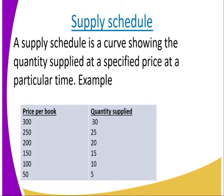An example: we have the price of the book and the quantity that was supplied. When the price is at 300, the quantity supplied was 30. When it is at 250, the quantity supplied is 25. When it is at 200, the quantity supplied is 20. When it is at 150, the quantity supplied is 50. When it is 100, the quantity supplied is 10. And when it is 50, the quantity supplied is 5.